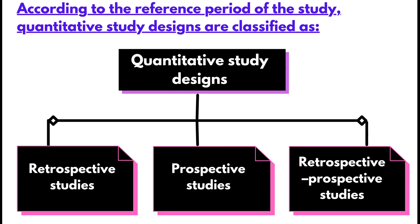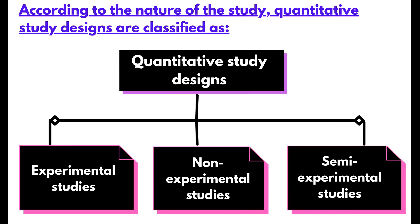According to the reference period of the study, quantitative study designs are classified as retrospective, prospective, or retrospective-prospective. According to the nature of the study, quantitative study designs are classified as experimental studies, non-experimental studies, and semi-experimental studies.